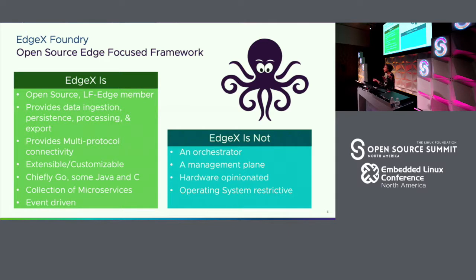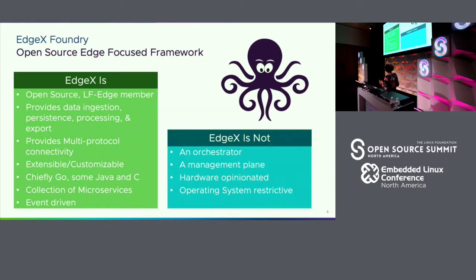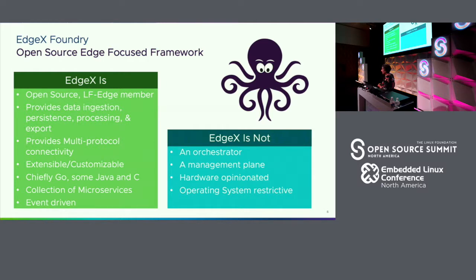It's event-driven — as sensor data arrives, it triggers certain actions. Is this temperature above 100? Do something. The pressure is above something — turn on a valve. But what is it not? It's not an orchestrator, so it would fit in with something like K3S. It isn't a management plane — some other central brain will say do something, load something. It has no opinion about the hardware it runs on: it will run on a Raspberry Pi 64-bit or x86 from any vendor. It's not operating system opinionated either; currently we're using Ubuntu but anything could work.